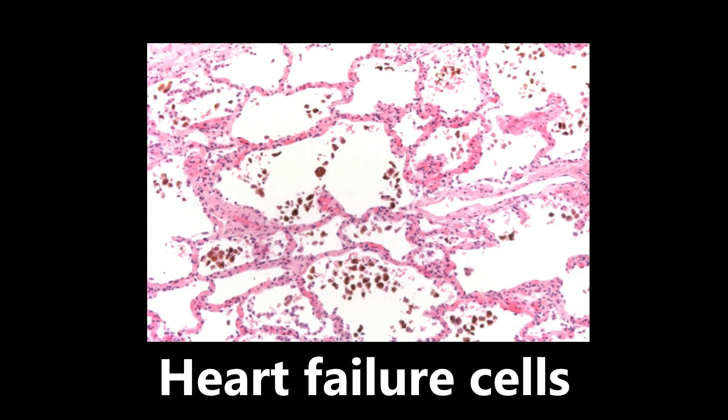Getting back to histology — this is an example of what we call heart failure cells. What we're looking at are hemosiderin-laden macrophages seen in the alveoli. We see all these hemosiderin deposits in the alveoli of the lungs, which is obviously very abnormal. If we see that, we want to be thinking about heart failure cells.